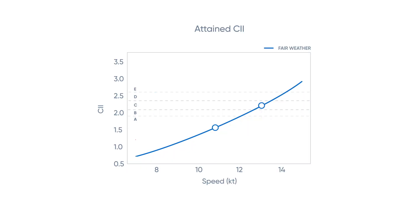The other dependency is weather. If you make the same plot but now add a Beaufort 6 relationship, you can see that you move the whole line up and you're operating in a very different regime. So both speed selection and weather impacts are going to greatly impact your CII score. That brings it almost to voyage optimization, where you take weather as a resistance factor into account and try to optimize the economics.